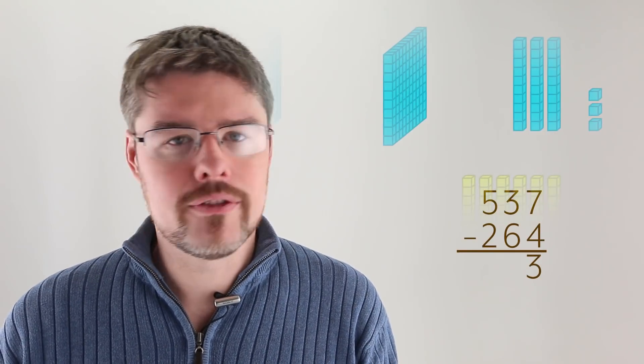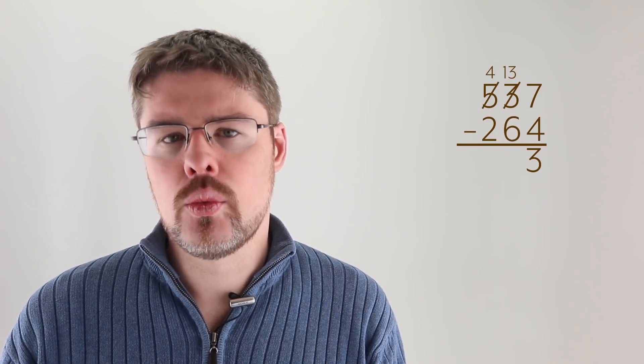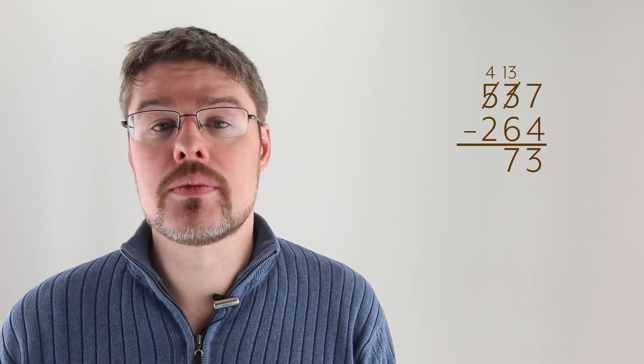Now let's do here with the numbers what we just did with the blocks. That is to say, let's subtract the ones, giving us again 3. Again, we need more value in our tens place, so we're going to take one of the hundreds, call it 10 tens, add it to the 3, and now we can do the subtraction where we get 7. Finally, we're going to subtract the hundreds from one another. And now you can see our final answer, 273.